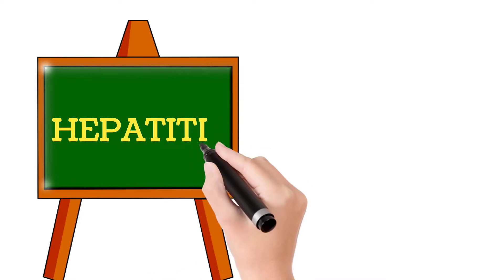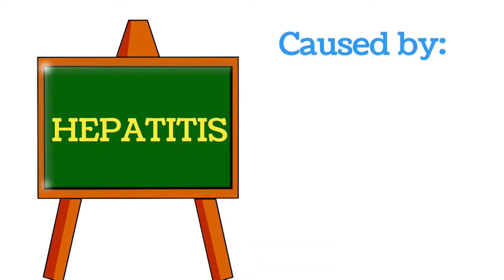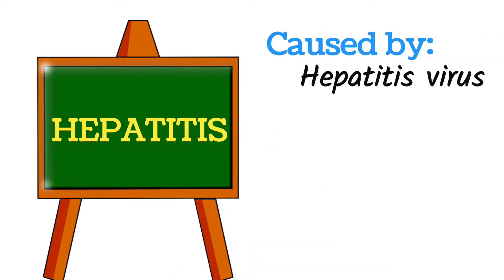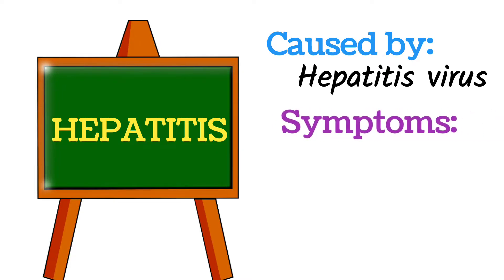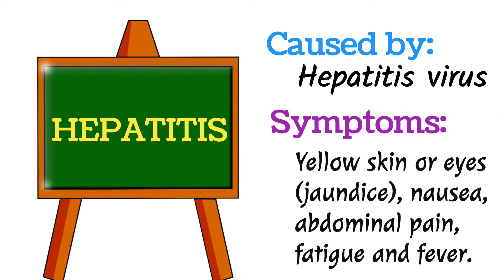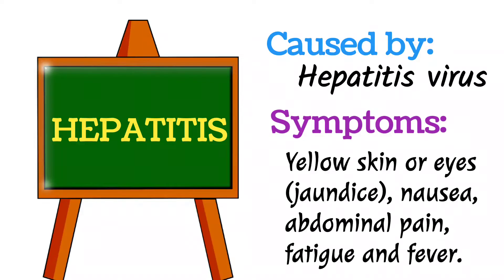Next disease is Hepatitis. Hepatitis is caused by the Hepatitis virus. There are three kinds: Hepatitis A, Hepatitis B, and Hepatitis C. This disease is usually spread through contaminated water and food. The symptoms include yellow skin or eyes, which are signs of jaundice, as well as nausea, abdominal pain, fatigue, and fever.